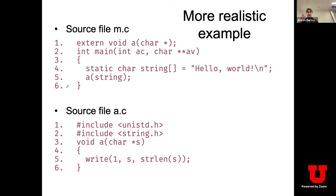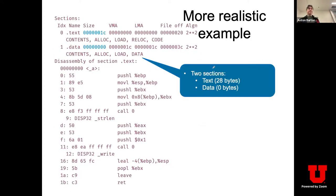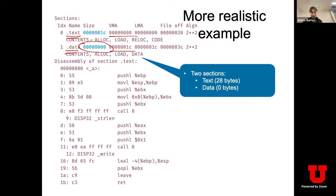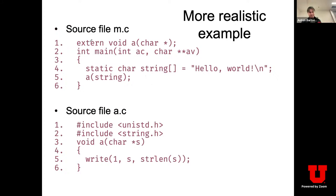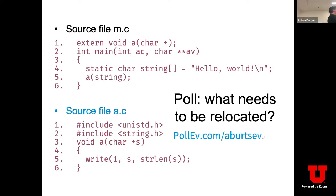Let's look at the second file, a.c. The compiler generates something similar. Using objdump, we see it generates text and data sections. Text starts at zero and data starts at 0x1c. Interestingly, the data section is zero bytes because there are no global variables in this file. Now, I'll ask a poll question: when this a.c file is compiled separately and later linked, what symbols inside it will need to be relocated?